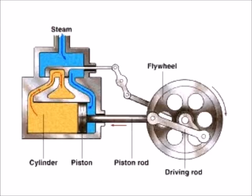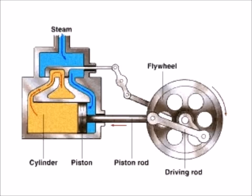Inside a steam engine, steam is produced by boiling water. The pressure of the expanding steam is used to push a piston to and fro in a hollow tube called a cylinder. The piston fits tightly inside the cylinder.